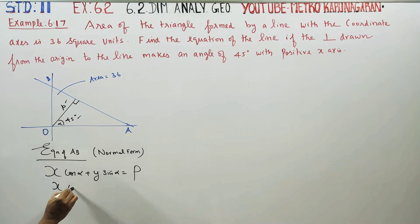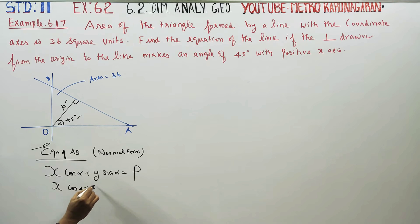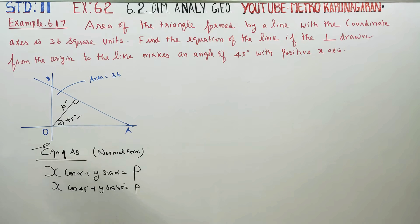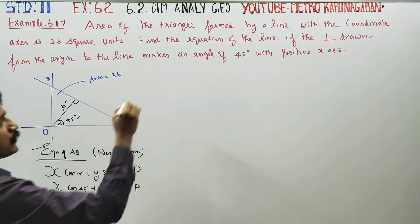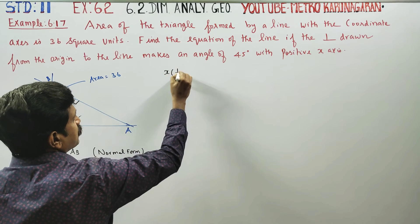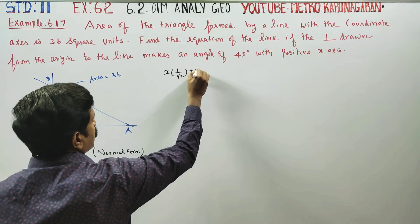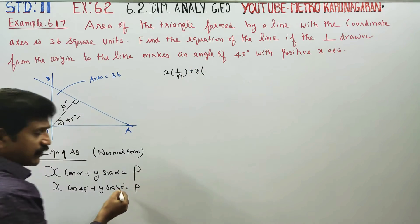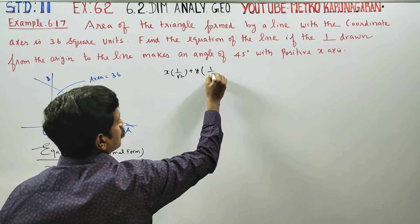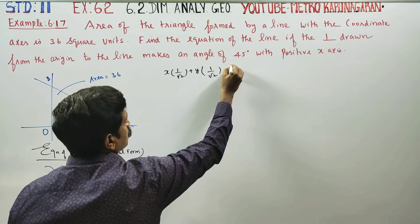x cos(alpha) + y sin(alpha) = P. Using alpha = 45 degrees: x cos(45°) + y sin(45°) = P. What is cos 45? It is 1/√2. So x × (1/√2) + y × sin(45°) = 1/√2 = P.